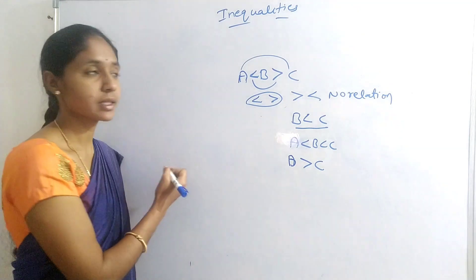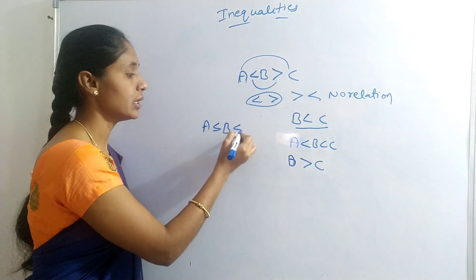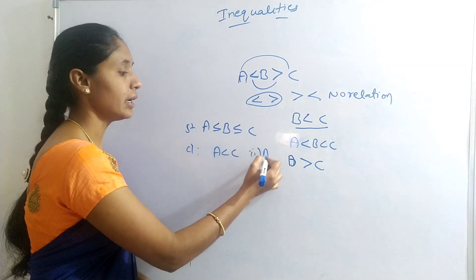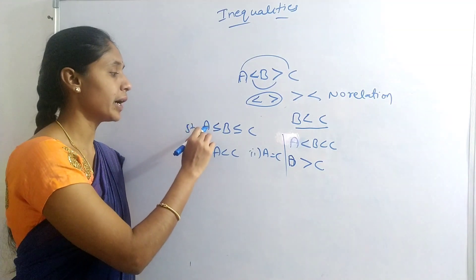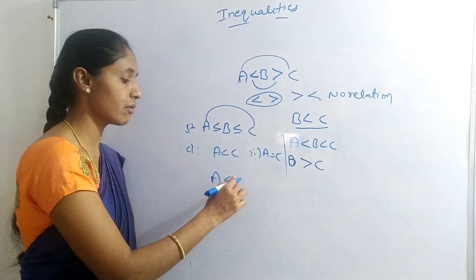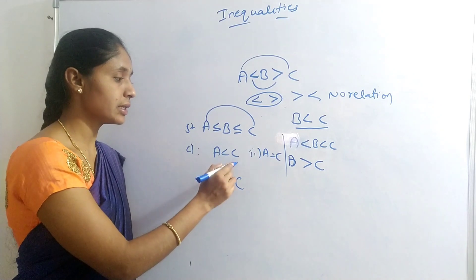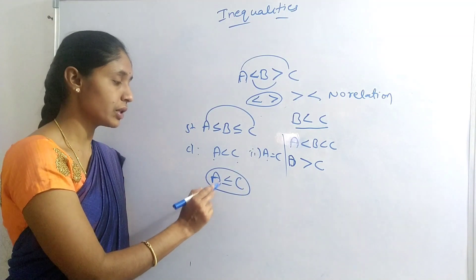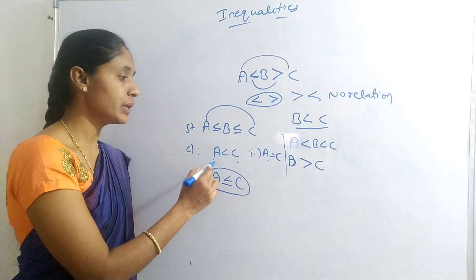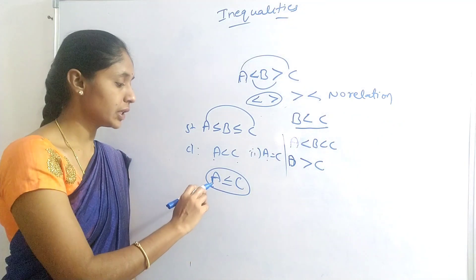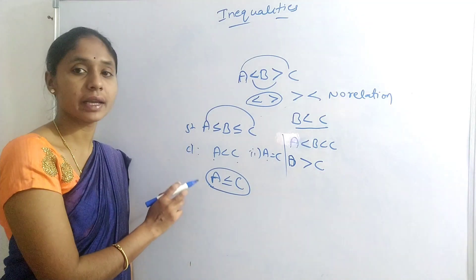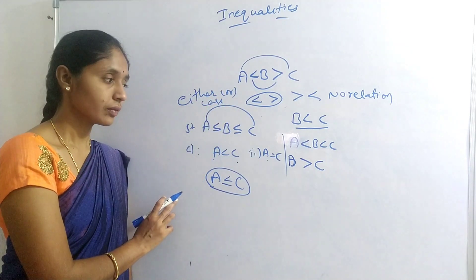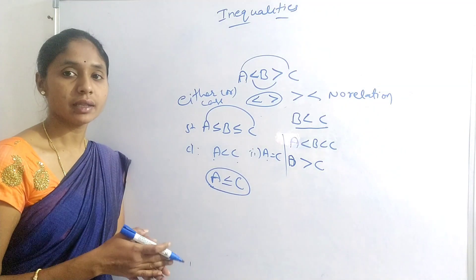Here is one more case. Statement: A less than R equals to C. Conclusions: first, A less than C; second, A equals to C. We can find the relation A less than R equals to C from the statement. The first conclusion A less than C is true, and A equals to C is also possible — this is a complementary pair. When we combine these two conclusions, either one of them is true. This is the 'either or' case, and we should conclude the answer as either or.